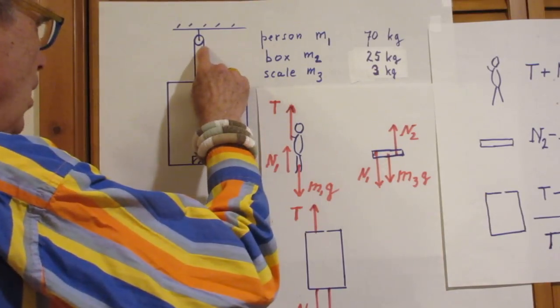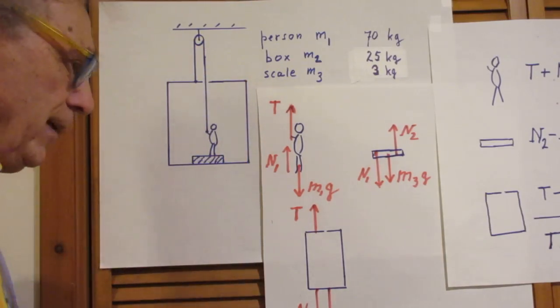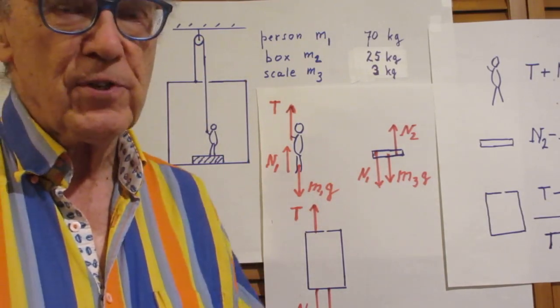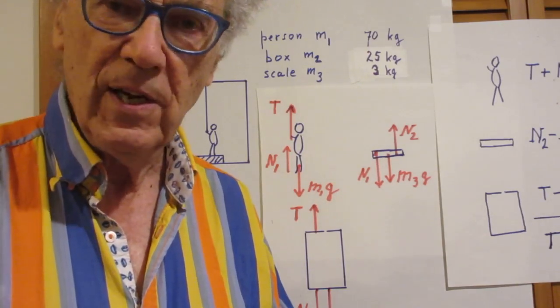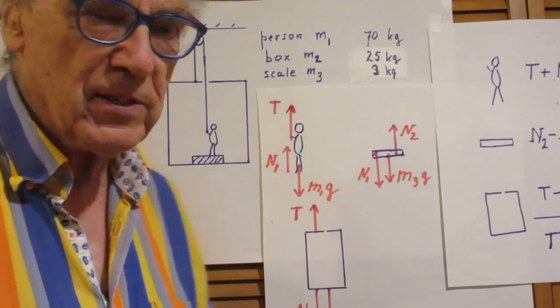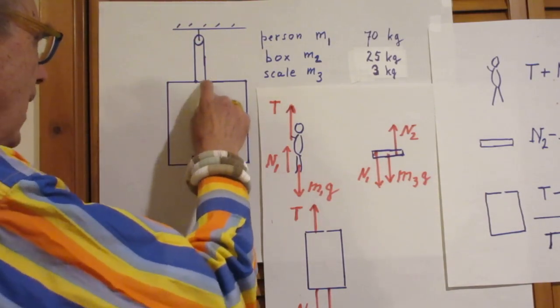If it were not the same, if it were larger here than there, then it would mean that there is a net force on a piece of rope, and the piece of rope has no mass, so it would give an infinite acceleration. So the tension here is everywhere the same.